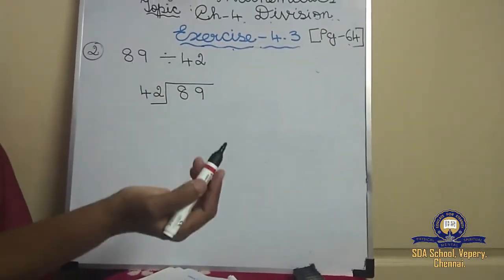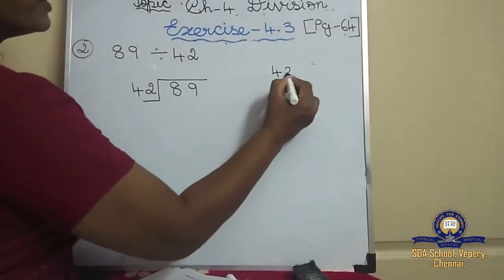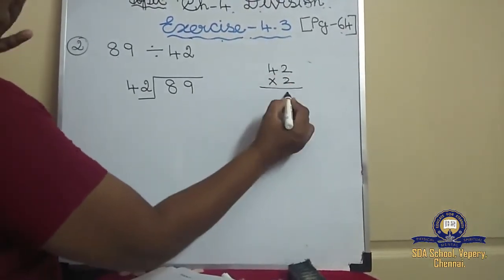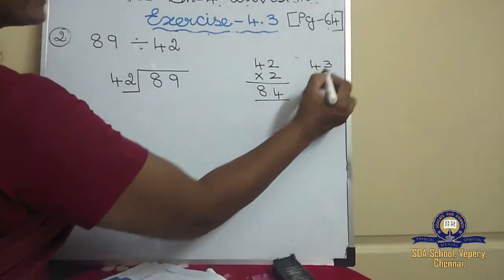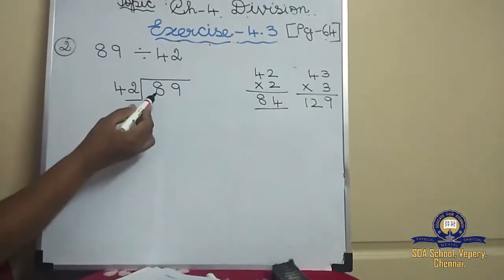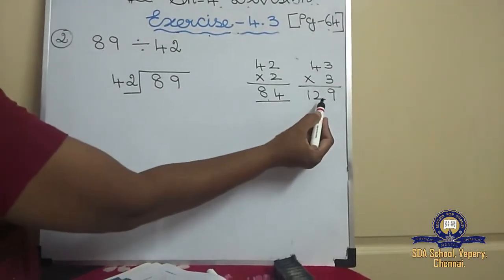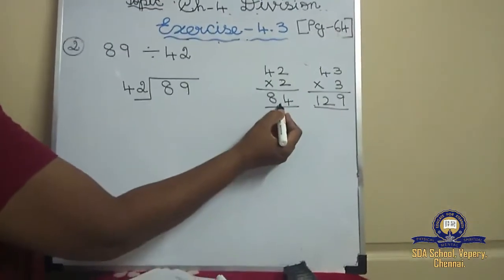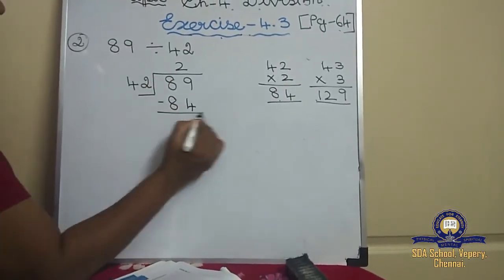So here, multiply 42 from the 2 tables: 42 twos — 2 twos are 4, 2 fours are 8, so 84. Can we write 3? 42 threes — 3 twos are 6, 3 fours are 12, so 126. But the dividend is 89. 84 fits below 89 but 126 does not, so write the before number: 42 twos are 84.